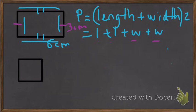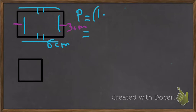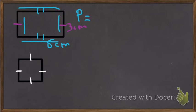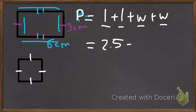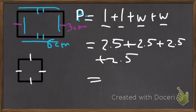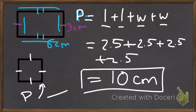Now we're going to look at our square underneath. Squares are unique in the sense that they have four equal sides. If we measure one of these sides, it's about 2.5 centimeters. So perimeter equals 2.5 plus 2.5 plus 2.5 plus 2.5. When we add that all up, we're going to get 10 centimeters. So the perimeter of our square is equal to 10 centimeters.